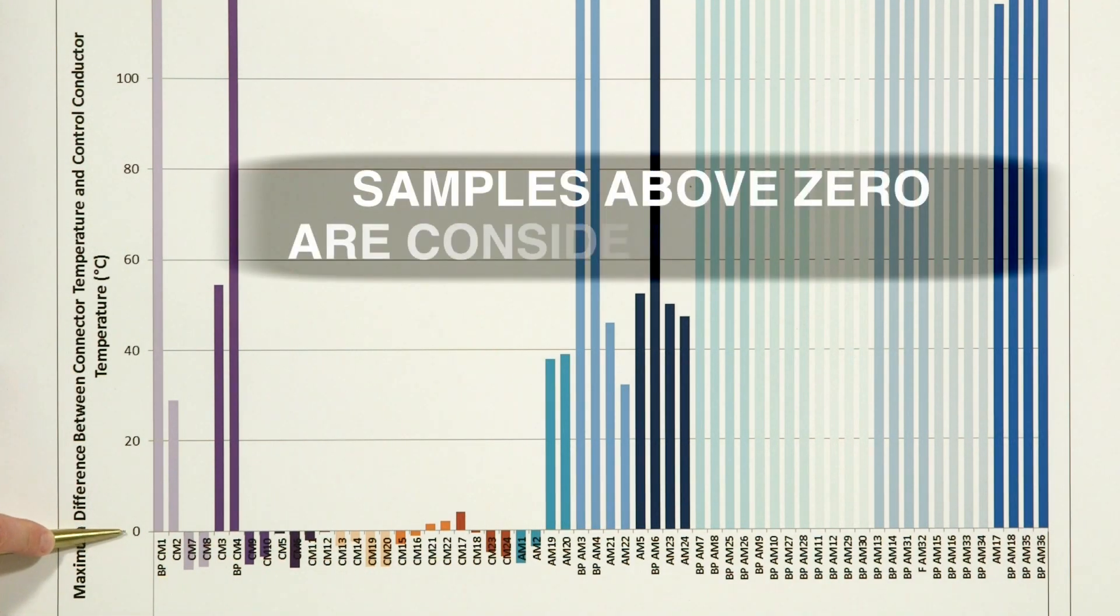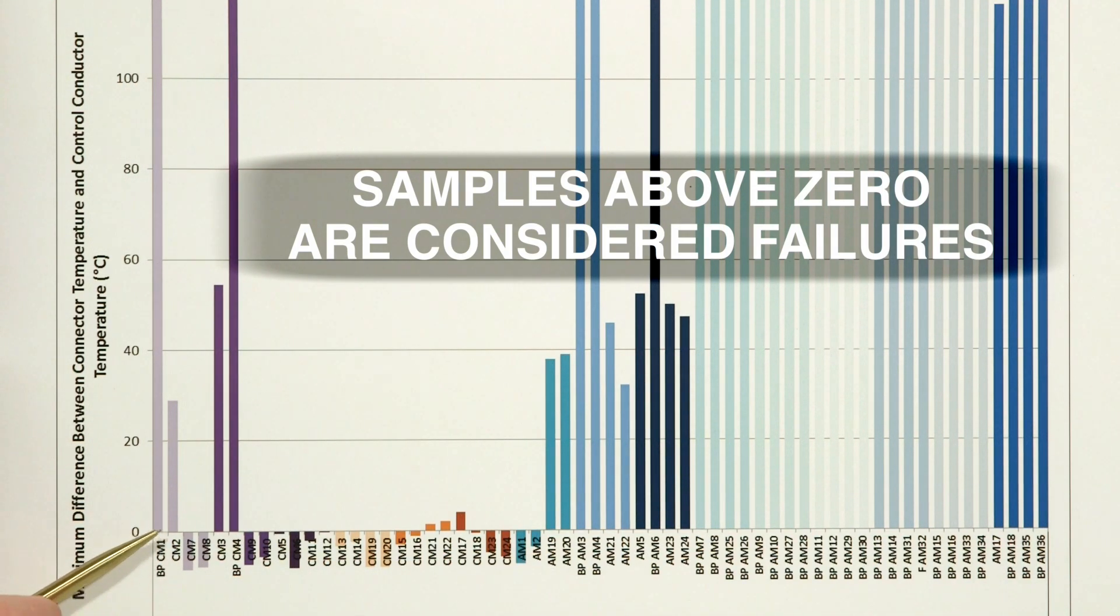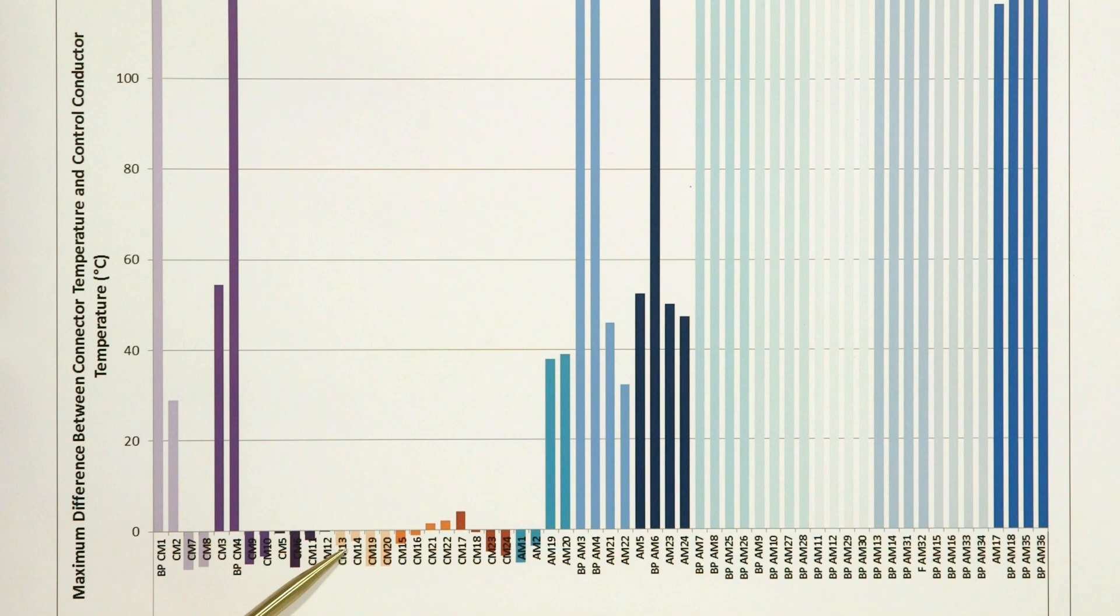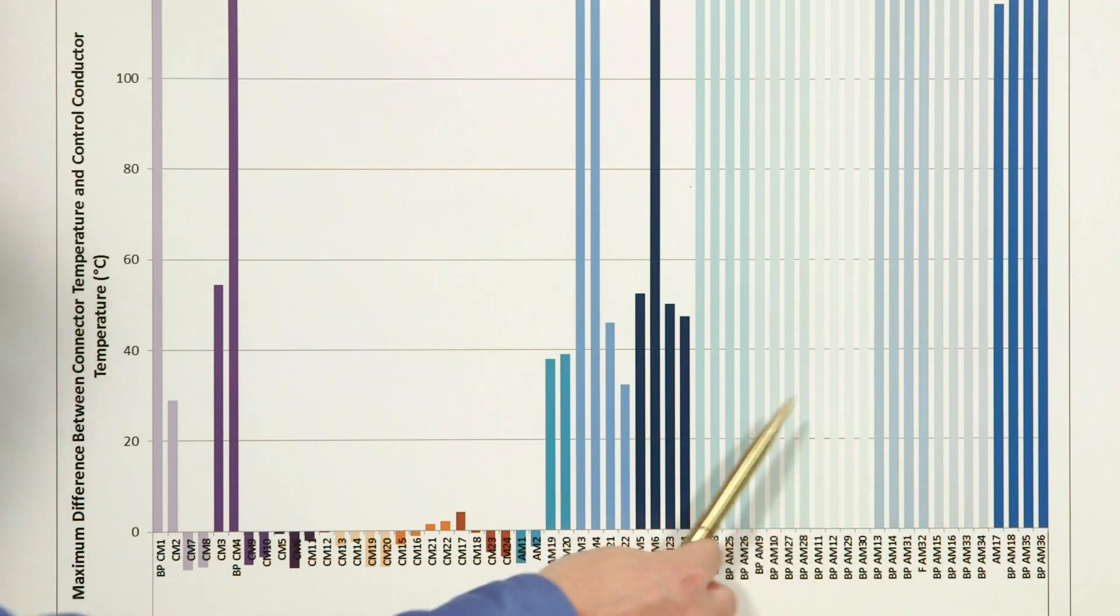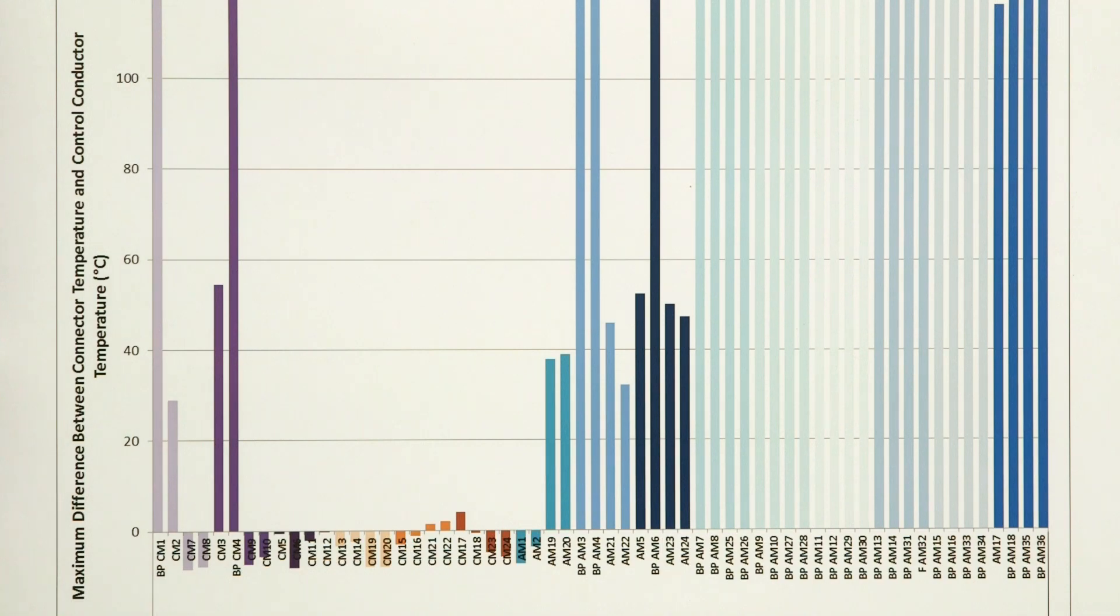As we can see, the samples with copper wire with aluminum connectors have some that are below the control temperature and some that are above. The copper wire samples with copper connectors have the majority that are below the control temperature with a few that are slightly above. With the aluminum wire with aluminum connectors, we have the majority of the samples that are well above the control temperature.